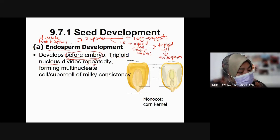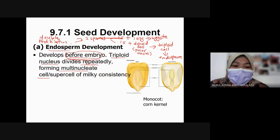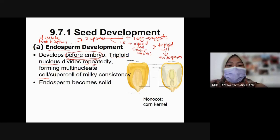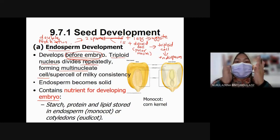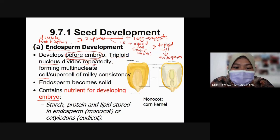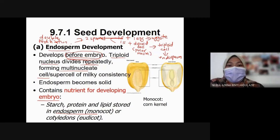The triploid nucleus divides repeatedly, forming a multi-nucleated supercell of milky consistency. Then the endosperm becomes solid and contains nutrients meant for the developing embryo — it is the place where all nutrients used by the embryo are stored. The endosperm contains starch, protein, and lipid, which are stored in the endosperm of monocots or in the cotyledon of dicots.